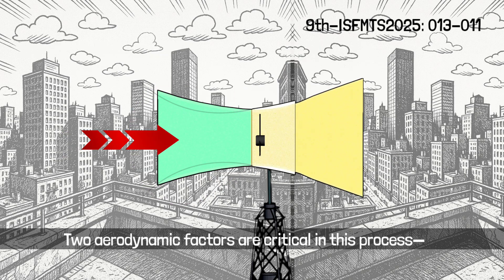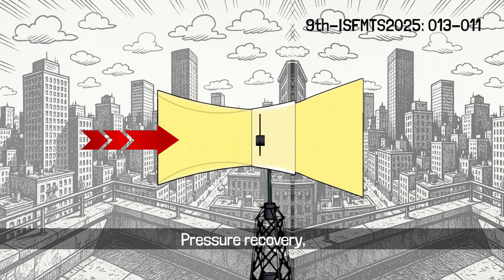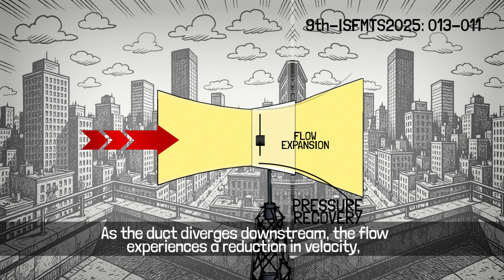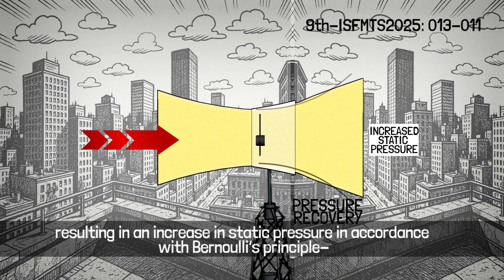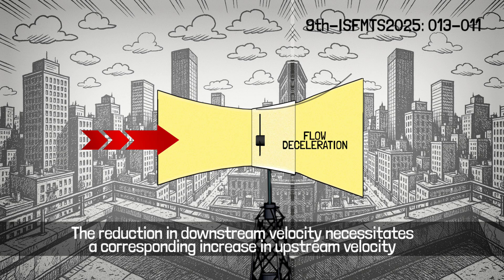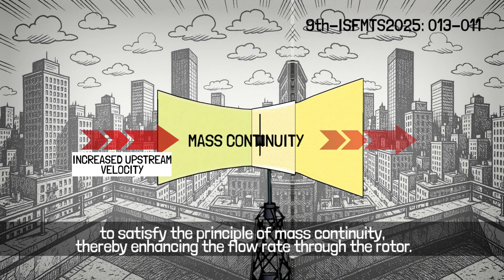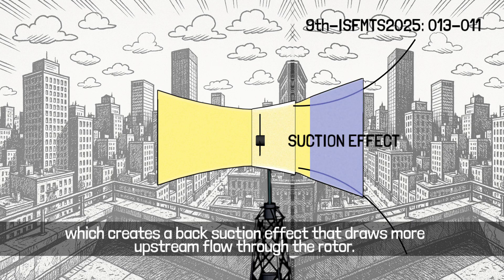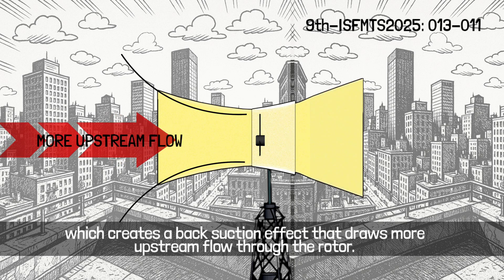Two aerodynamic factors are critical in this process. The first is pressure recovery: as the duct diverges downstream, the flow experiences a reduction in velocity, resulting in an increase in static pressure in accordance with Bernoulli's principle. This reduction in downstream velocity necessitates a corresponding increase in upstream velocity to satisfy mass continuity, thereby enhancing flow rate through the rotor. The second factor is the low pressure at the duct outlet, or low back pressure, which creates a back suction effect that draws more upstream flow through the rotor.